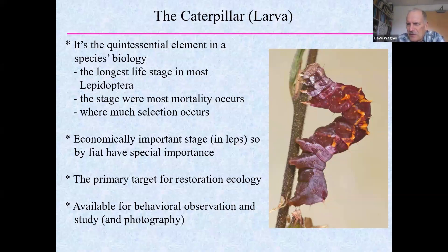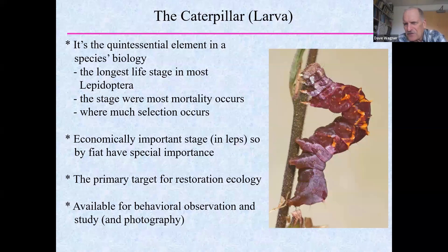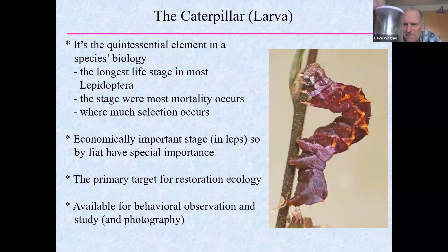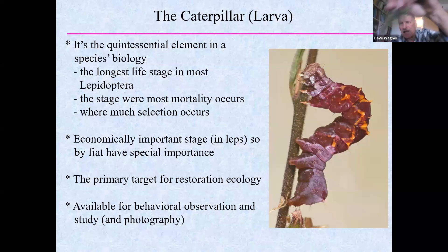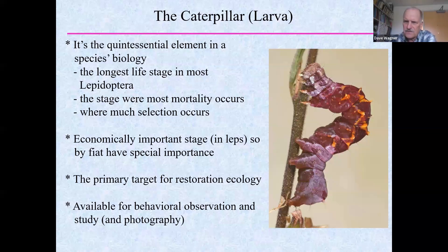Caterpillars are still so much unknown about them. They are the quintessential element of moth biology — often the longest life stage. I currently have a Globifera — a big tent caterpillar relative — that I'll be caring for through 11 months. Some caterpillars in the Arctic live up to seven years, with the longest individuals in harsh conditions living 13 or 14 years. This is the stage where most mortality and the greatest amount of natural selection occurs.